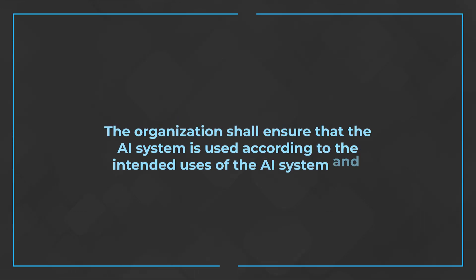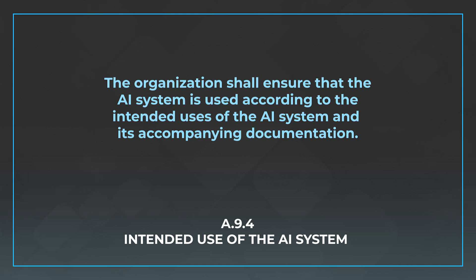The last control is A.9.4, intended use for the AI system. This can also come into play with terms of use. The control says the organization shall ensure that the AI system is used according to the intended uses of the AI system and its accompanying documentation. You need to present users with their responsibilities and the guidance in order to leverage your system, but you also need a way to ensure they're using it in accordance with that guidance. Spend some time looking at A.9.4 implementation guidance and thinking about how this relates to your system and what information you need to collect to ensure your end users are leveraging your systems as intended.